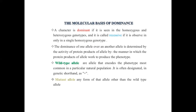Moving to molecular basis of dominance — how are genes getting regulated? A character is dominant if it is seen in both the homozygous and heterozygous genotype, and it is called recessive if it is expressed only in homozygous condition. Same type of characters when expressed is known as homozygous; when different characters are expressed it is known as heterozygous. The dominance of one allele over another is determined by the activity of protein products of the allele.